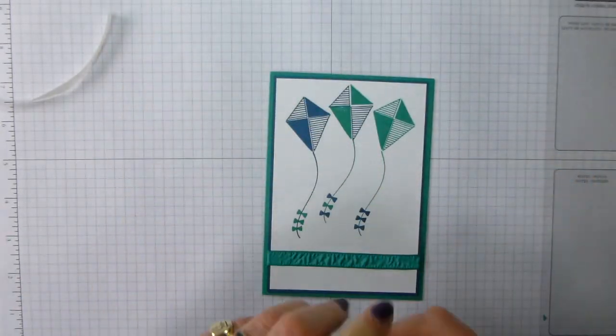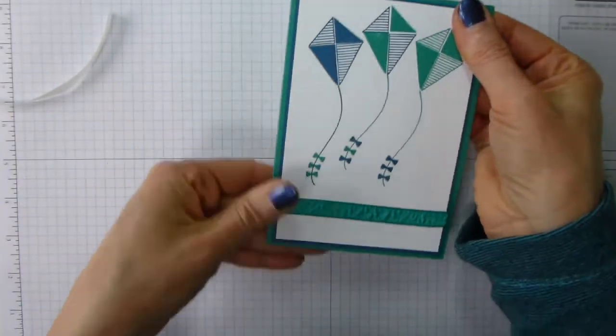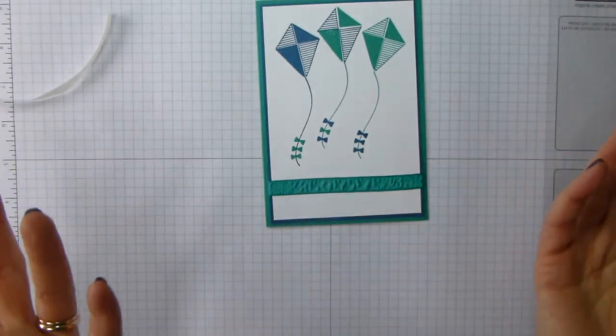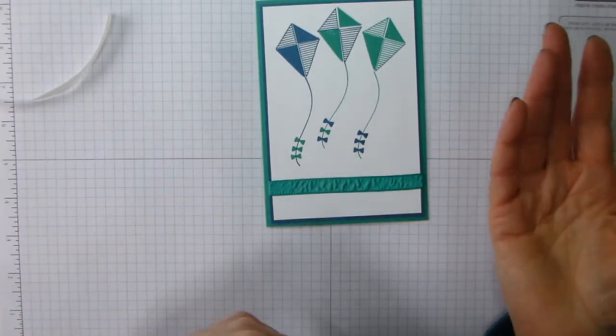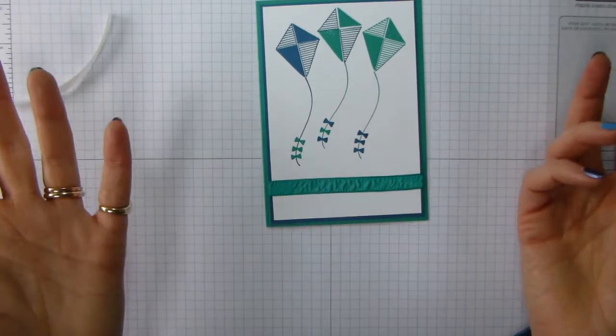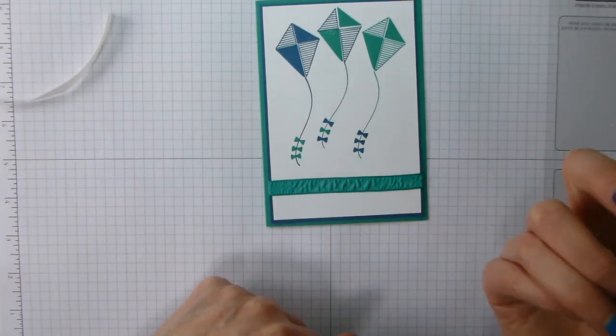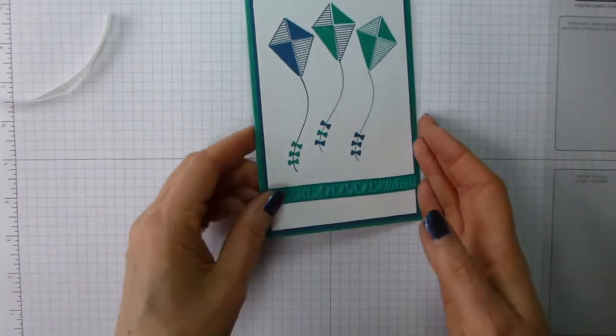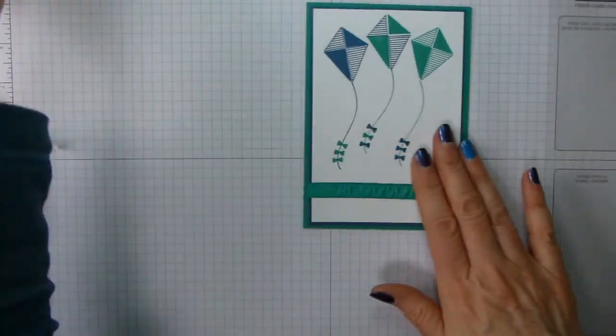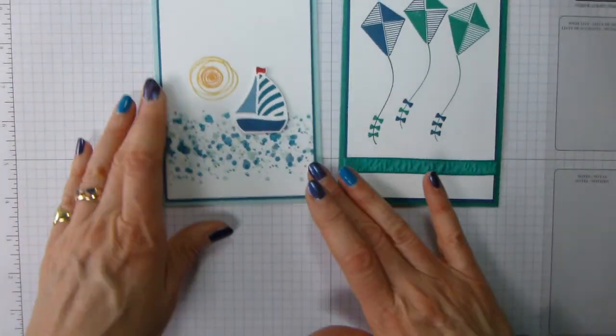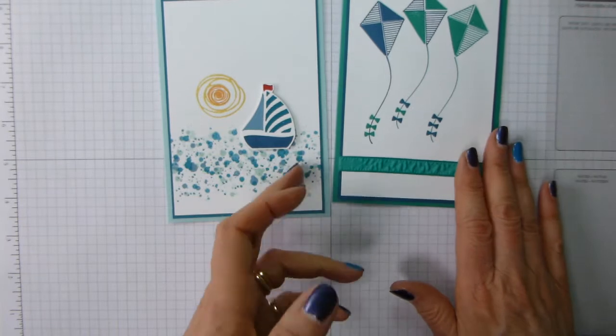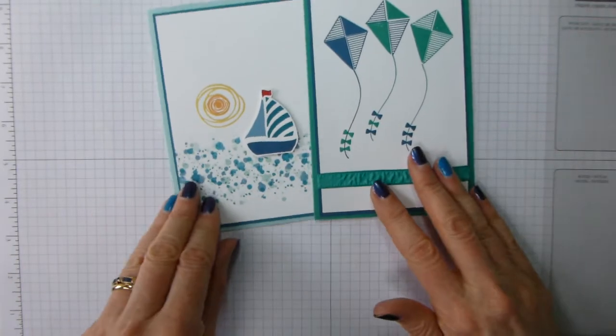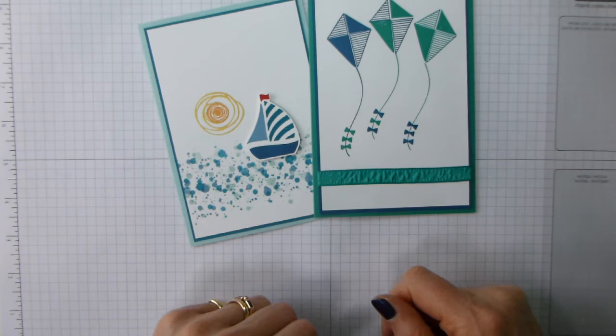Now obviously you could change up the colours and make it into a more female card. Possibly use three colours rather than two. But anyway, there you are, on the fly. So that was the one using a bazillion and one ink pads. This uses two, and just the addition of a little bit of ribbon. So I hope you've enjoyed that.